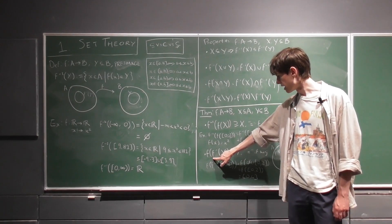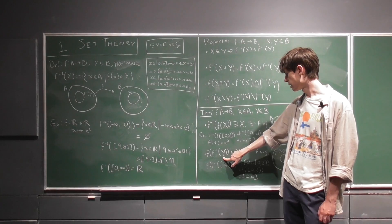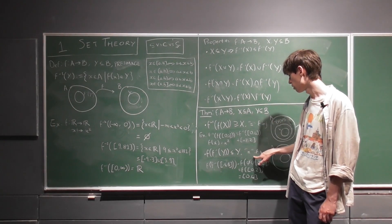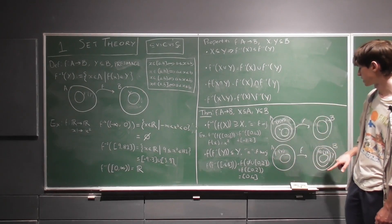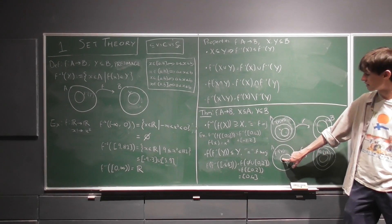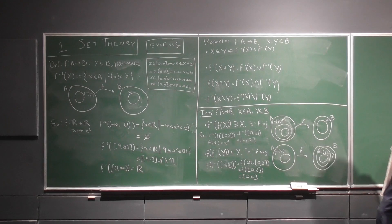And here, the pre-image of y, so the image of the pre-image of y is contained within y and equality holds if f is surjective. So now we have some set here, y living in b. We can look back at its pre-image and the image of that pre-image it will be contained within y.